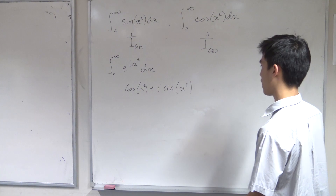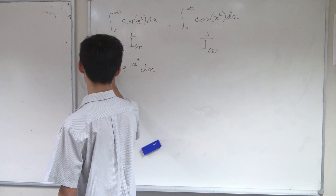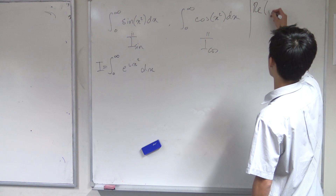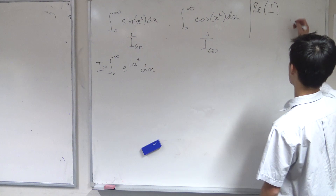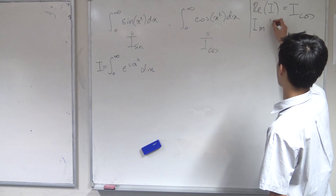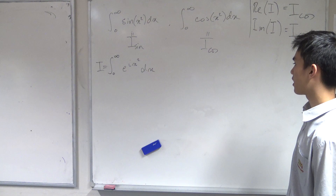So if we call this integral I, then taking the real part of I gives us I_cos, and taking the imaginary part of I gives us I_sine. That's the basic idea.